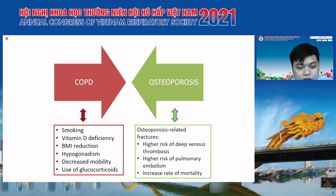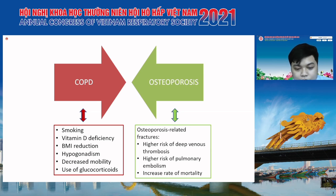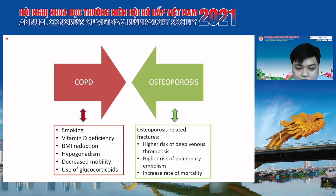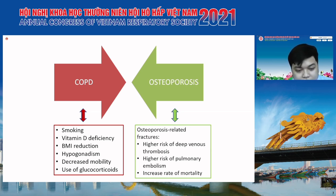A COPD patient has a number of risk factors for osteoporosis, such as smoking, vitamin D deficiency, reduced BMI, decreased mobility, and use of glucocorticoids. Therefore, COPD patients may have a higher risk of having osteoporosis. When having osteoporosis, they may develop secondary fractures, which may lead to a higher risk of deep venous thrombosis, pulmonary embolism, and increased risk of mortality.